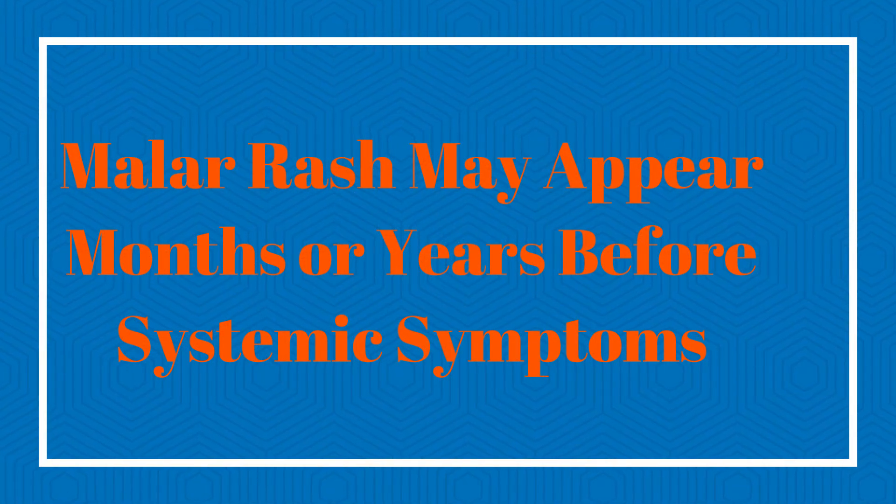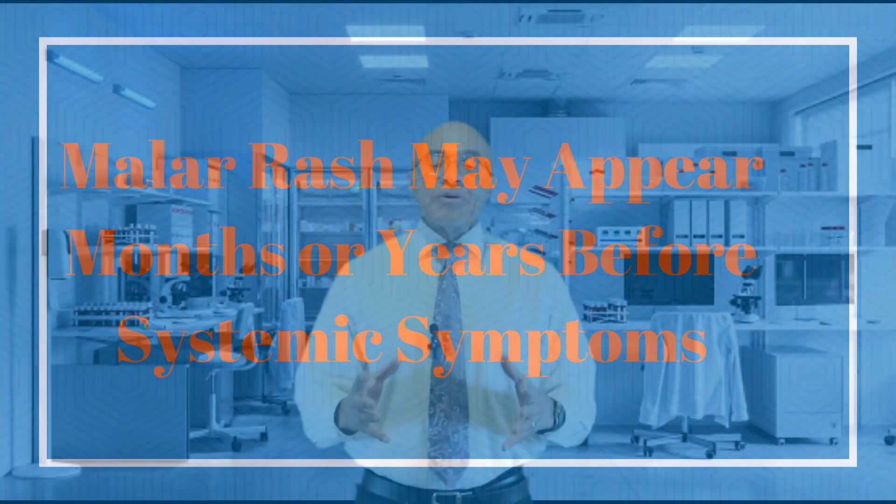Although a malar rash often appears in patients with SLE lupus, not every patient with lupus has a malar rash. The malar rash in lupus can present months or even years before the onset of systemic symptoms. It can appear spontaneously or after exposure to sunlight. The rash can be raised or flat, and it can last for weeks to months. Many patients with lupus report that the onset of the malar rash tends to signal an oncoming flare in their disease.